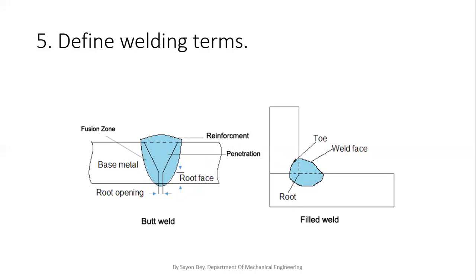The first term is bead — bead is the metal added during a single pass of welding. Next is root, root face, and root opening — it is the point at which the two pieces to be joined by welding are nearest. Another point mentioned here is toe — toe is the junction between the weld face and the base metal. The upper portion is called the weld face, and this is the base metal; toe is the junction between them.